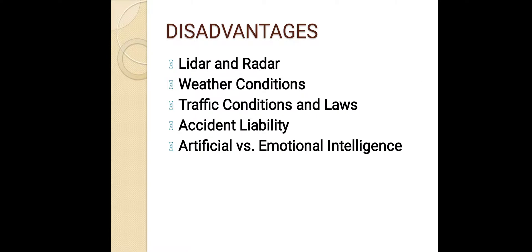Now coming to some disadvantages: LIDAR is expensive and still trying to strike the right balance between range and resolution. What if multiple autonomous cars were to drive on the same road — would their LIDAR signals interfere with each other? What happens when an autonomous car drives in heavy precipitation, if there is a layer of snow on the road, or the lane dividers disappear? Will autonomous cars have trouble in tunnels or on bridges? How will they do in bumper-to-bumper traffic? And who is liable for accidents caused by an autonomous car — the manufacturer or the human passenger?